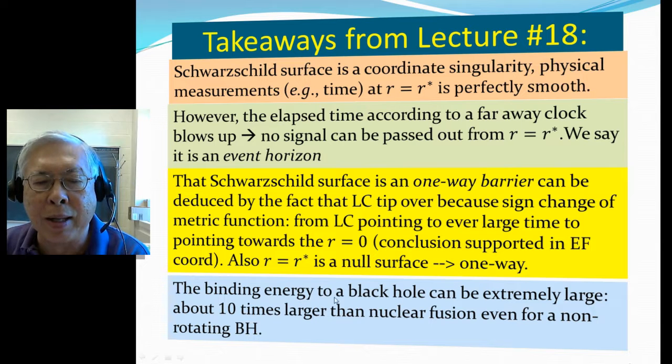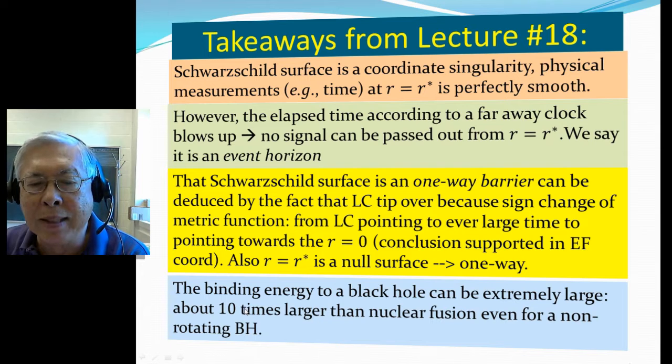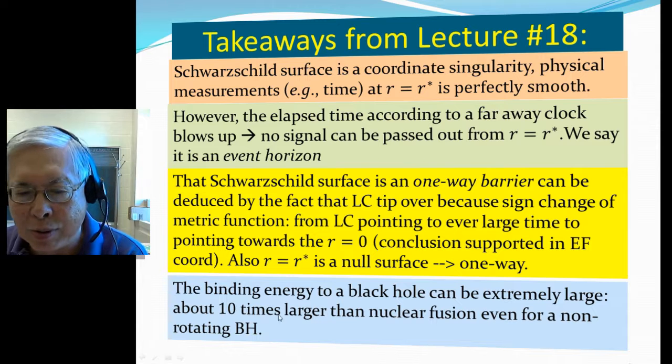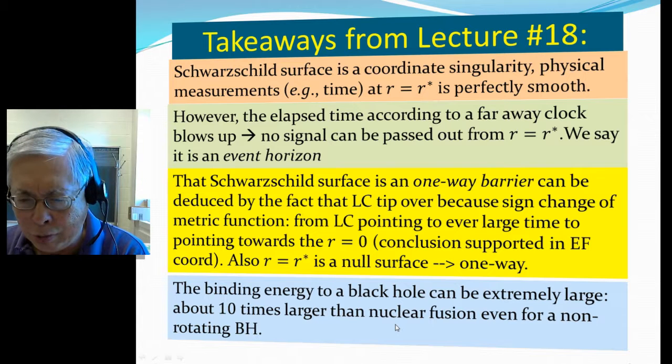And we also mentioned the binding energy to a black hole can be extremely large. This energy, any object bound to a black hole can be 10 times larger than the thermonuclear energy released. But this is for a non-rotating black hole. For a rotating black hole, this can be 70, 80 times larger than the nuclear fusion energy.